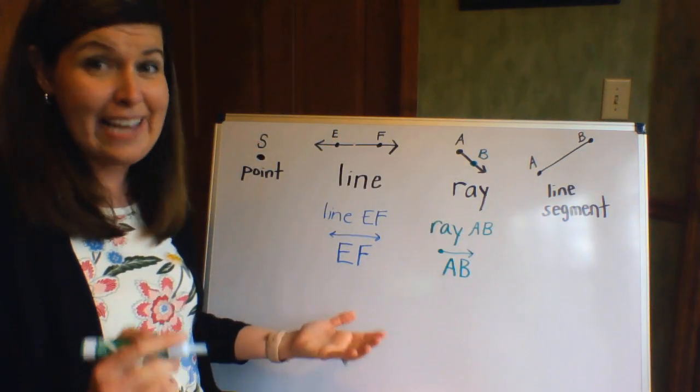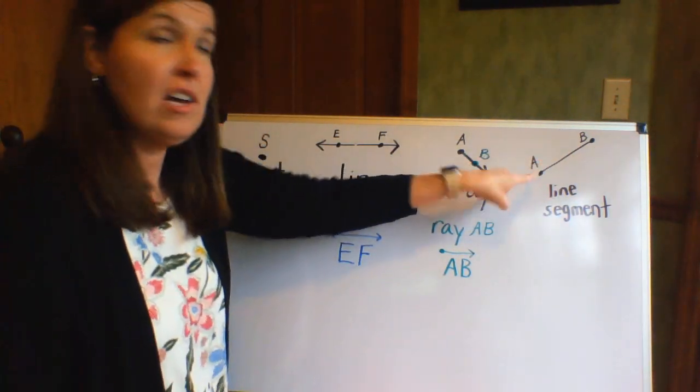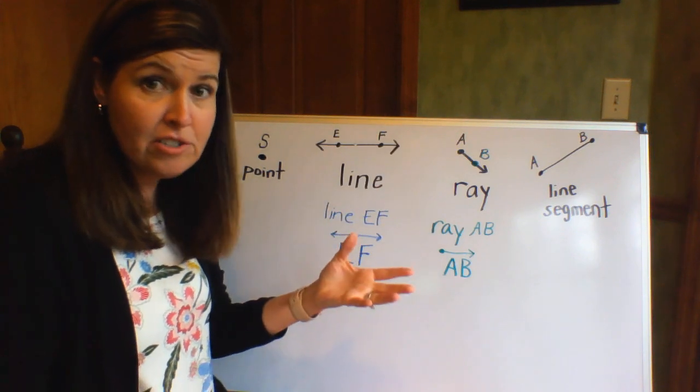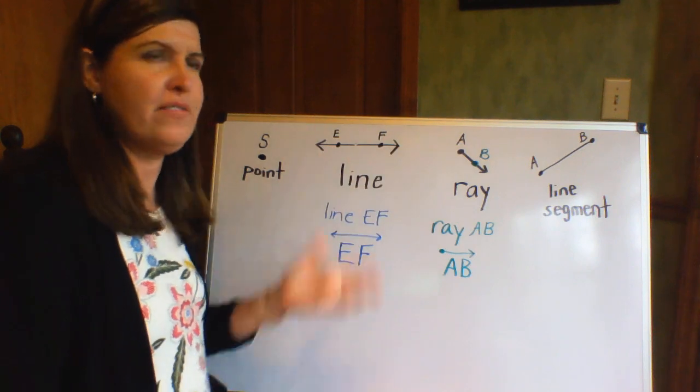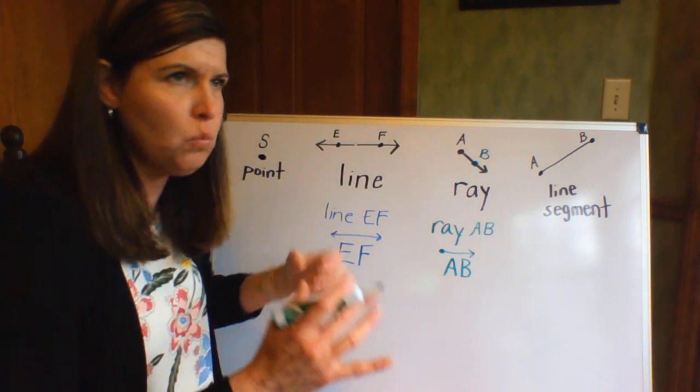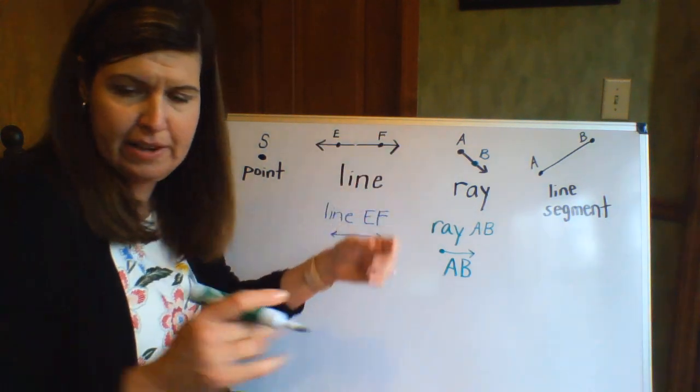Now same thing. These endpoints a lot of times have letters on the points that are identified. I did AB, but it could be different things. You could see LK or YW on them.